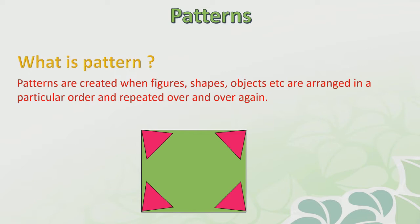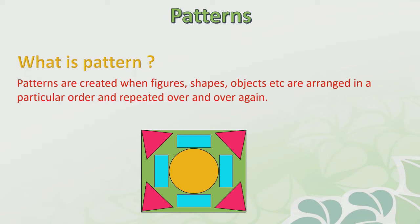Which shape is this? This is a circle. This is a rectangle. In the same way, in the opposite direction, you have to make another rectangle. In this way, we have completed our rangoli. We have used different basic shapes here, and when we arrange all these shapes in a particular order and repeat them over and over again, then this is known as a pattern.